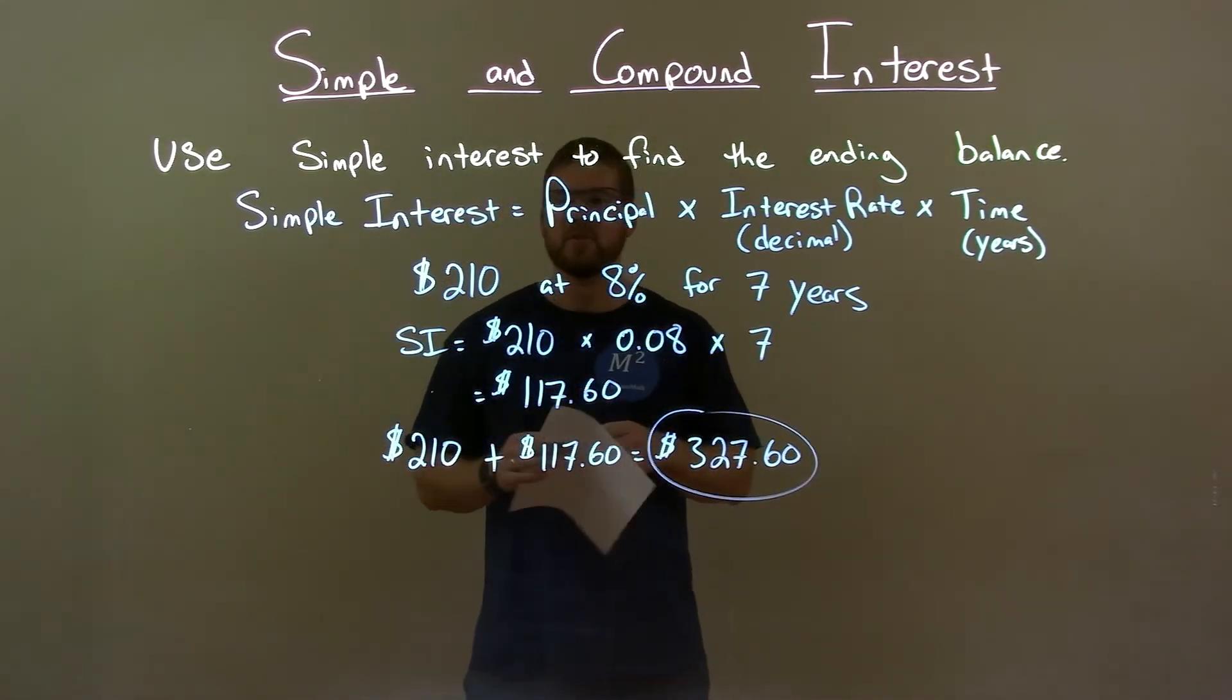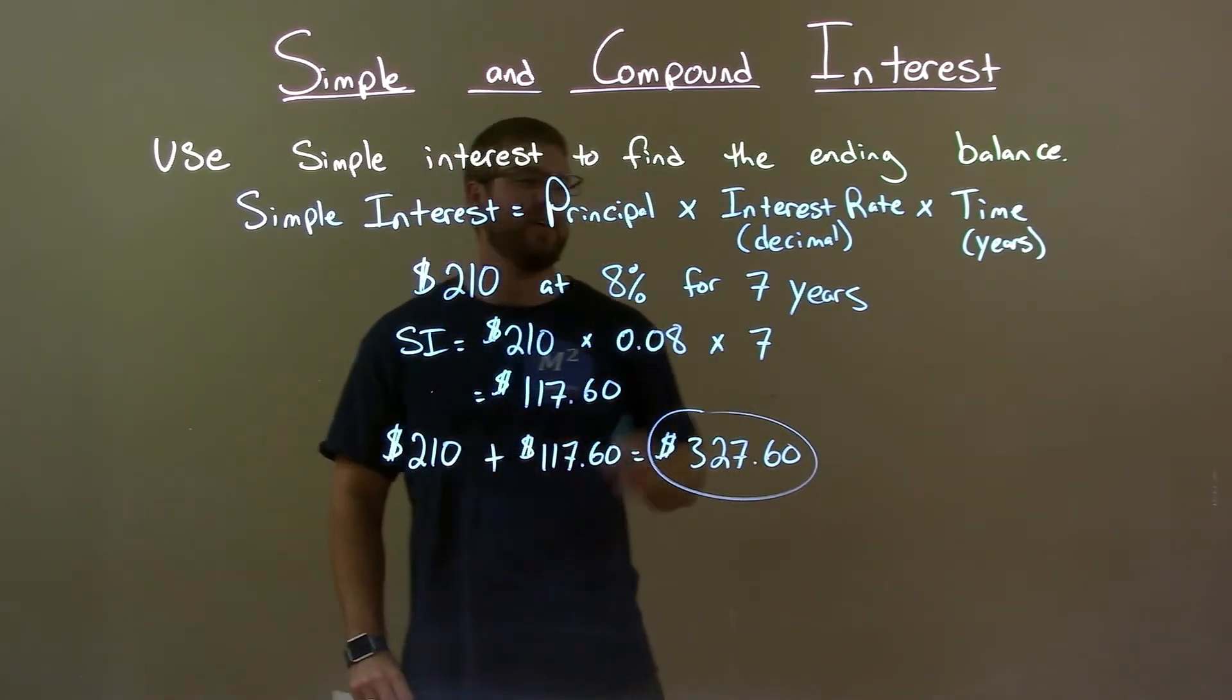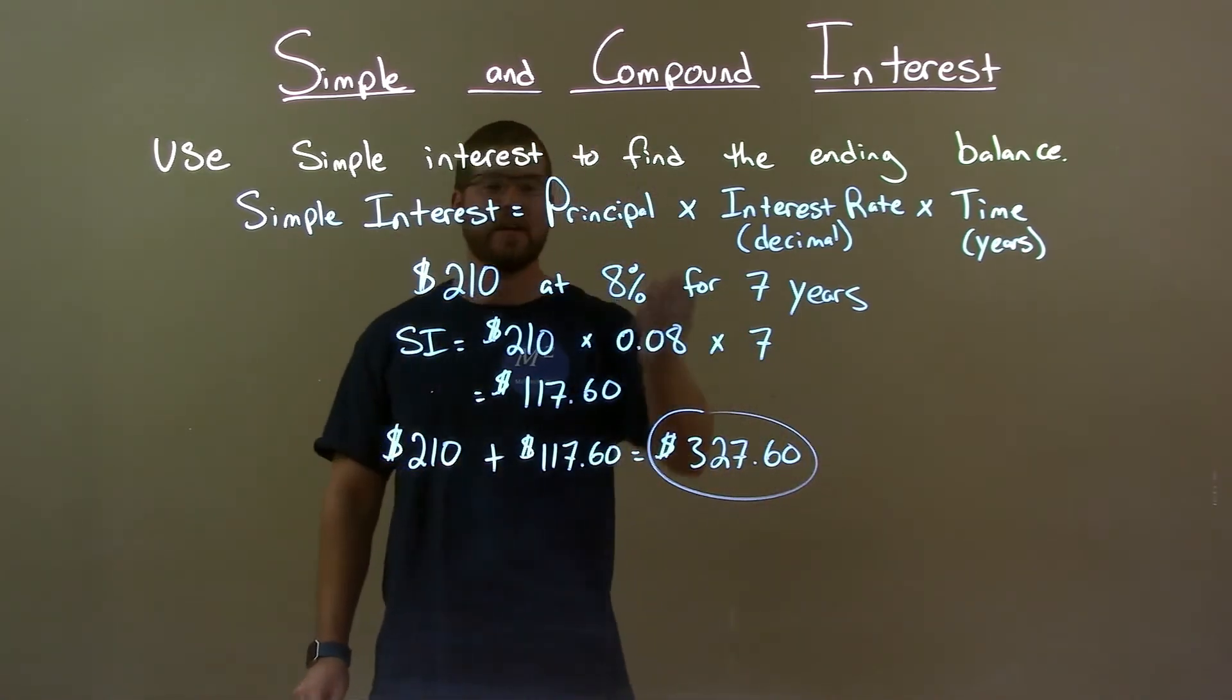Quick recap: we're given $210 at 8% for seven years and we need to find the simple interest of it.